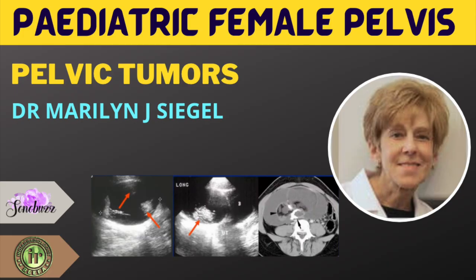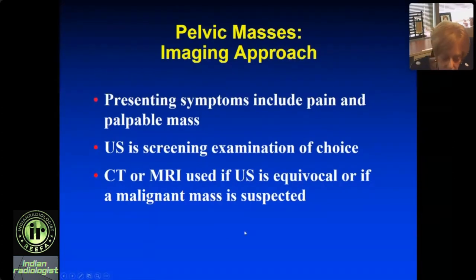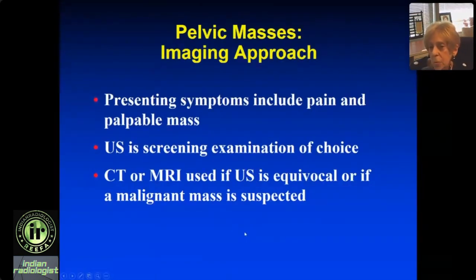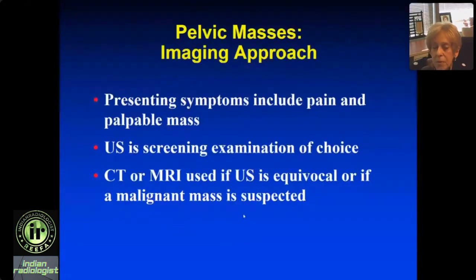The acute problems we commonly see: torsion obviously needs quick surgical intervention because you can't salvage the ovary. The cyst needs the correct diagnosis so patients can be treated appropriately, but that's conservative, usually with pain medications. Pelvic masses can also produce pain or present as a mass. We use ultrasound first; if there's a mass in the abdomen or pelvis we start with ultrasound. CT or MR is used if ultrasound is equivocal or if we think there's a malignant mass, then we stage it with one of these two.